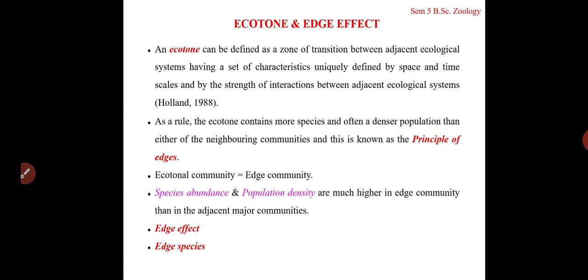There are many examples of ecotones. Where a river meets the sea or ocean, we call it an estuary. An estuary is a transition zone between the river and the ocean — it is not a completely freshwater ecosystem, nor a purely marine ecosystem. The water is brackish, between freshwater and marine. Similarly, there are junctions between grasslands and forests.